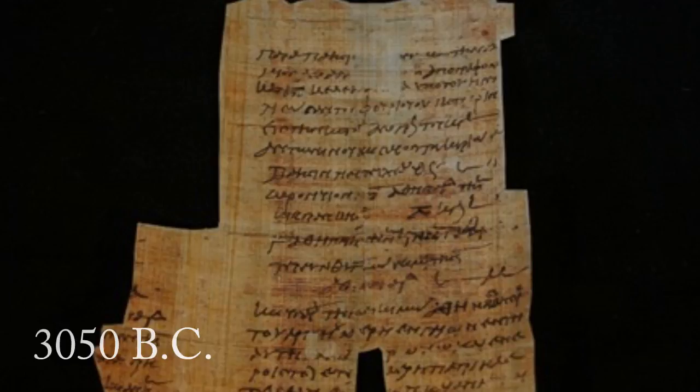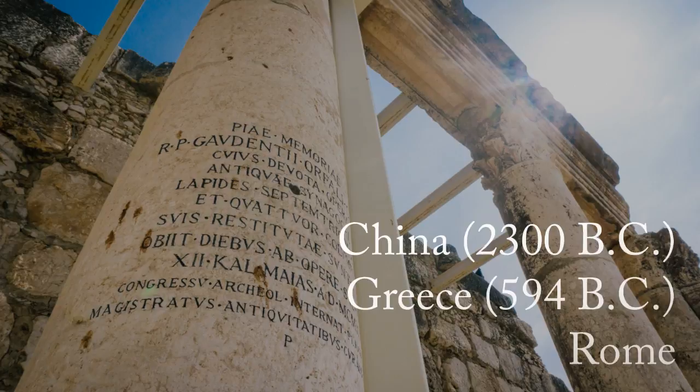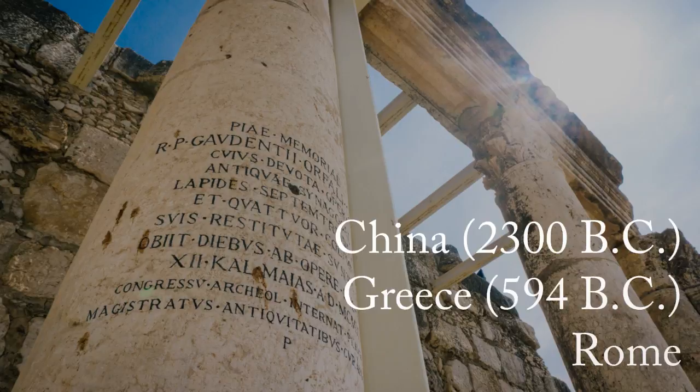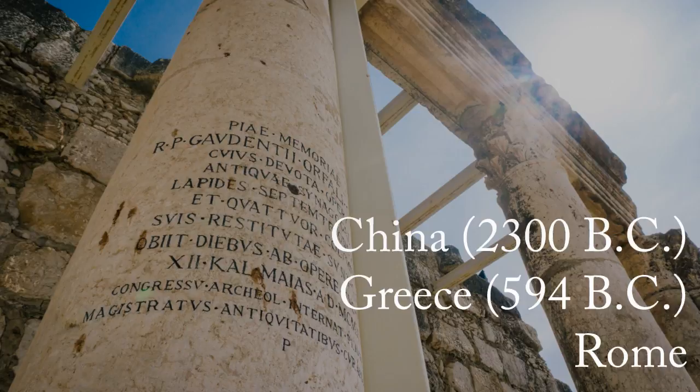Further census data was documented in China in 2300 BC, Greece in 594 BC, and in particular Rome, whose people recorded births, deaths, and comprehensively surveyed the country. The information collected during these early times formed a basis for the development of statistics to follow.